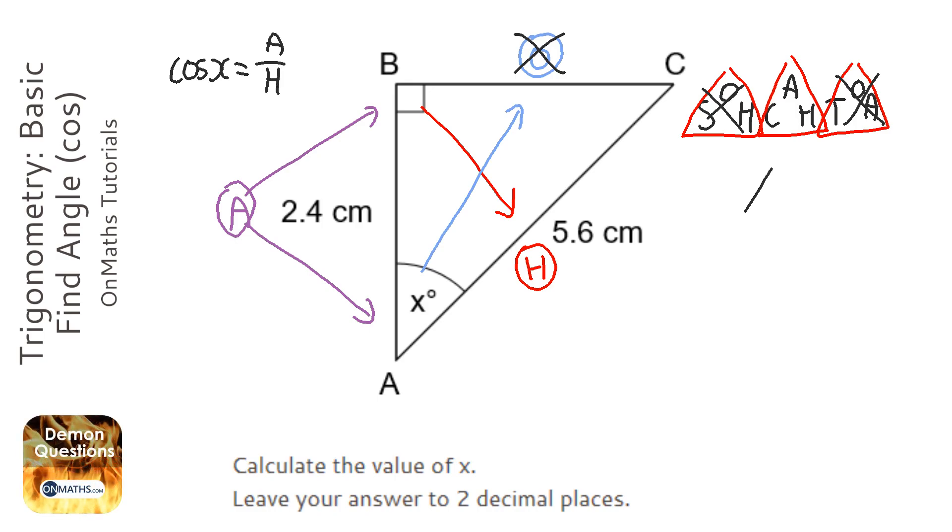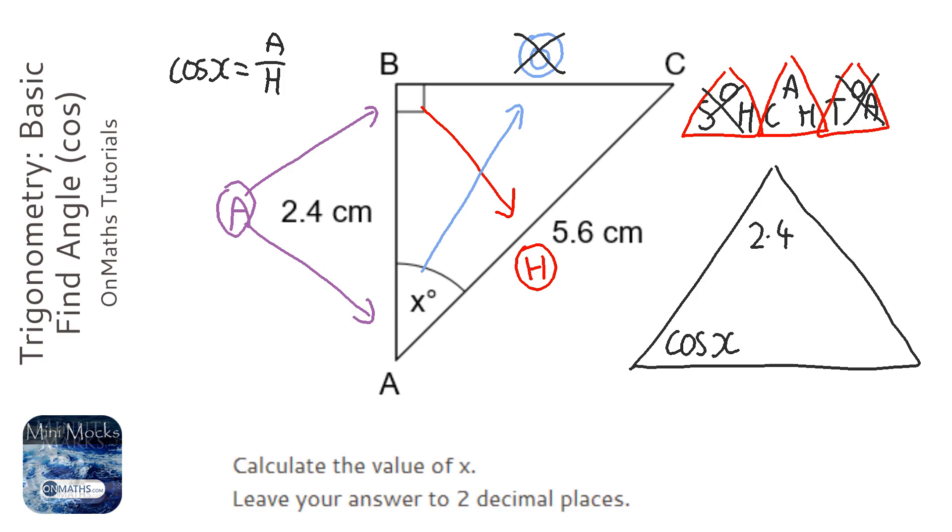I do it with a triangle. C stands for cos, and it's always cos the angle, so it's cos x. The A stands for 2.4, and the H stands for 5.6. So cos x equals 2.4 over 5.6.